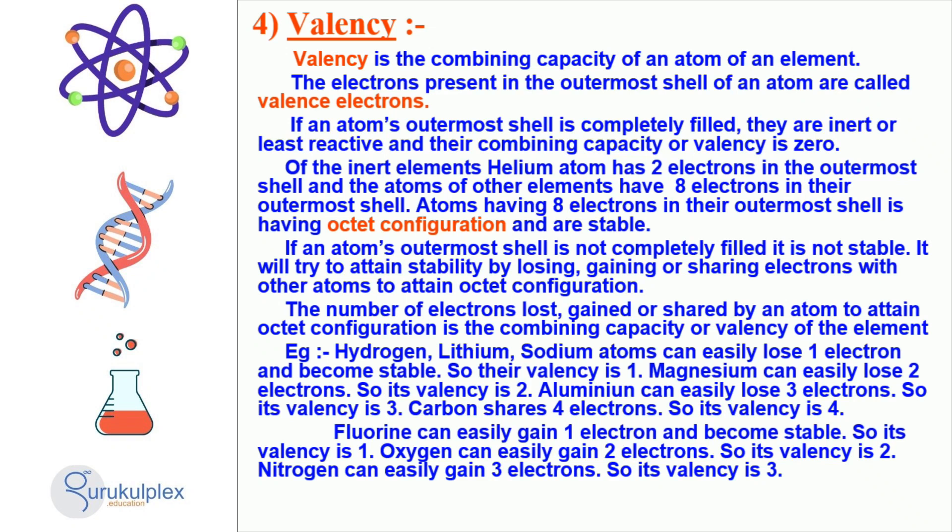For instance, the hydrogen, lithium, and sodium atoms can easily lose one electron and become stable with a valency of one. Also, magnesium can easily lose two electrons and have a valency of two.